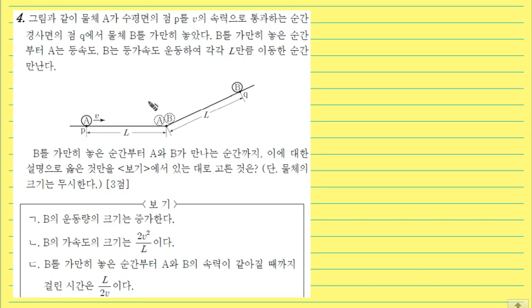4번부터 볼게요. 그림과 같이 물체 A가 수평면에 점 P를 V의 속력으로 통과하는 순간 경사면에 점 Q에서 물체 B를 가만히 놓았다고 되어 있어요. 가만히 놓았다는 얘기는 처음 속도 0이라는 얘기입니다.